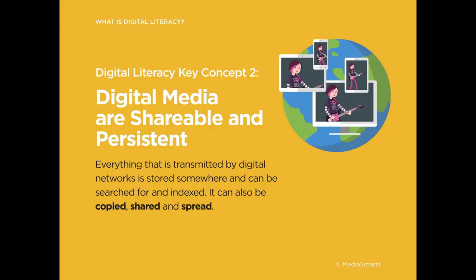Our first lesson and key concept covered. The second is: digital media is shareable and persistent. Once it's out there, it's kind of permanent. Getting rid of every copy of a digital record is really difficult because it gets copied, shared, and spread so quickly, and indexed by so many different things. Versioning history sites like the Wayback Machine can also cause things to be harder to get rid of.